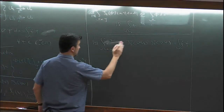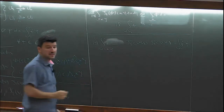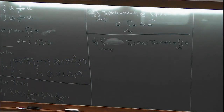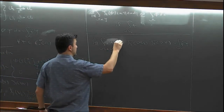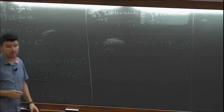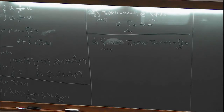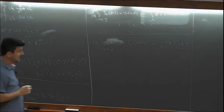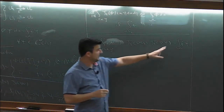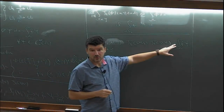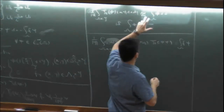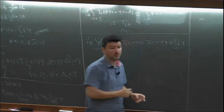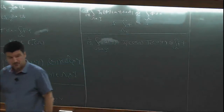T_ε acts on highly oscillating sequences by eliminating the oscillation, so the unfolded variational form becomes an integral on Ω × Y. This is an almost-equality, but we know that in the limit it becomes equality.